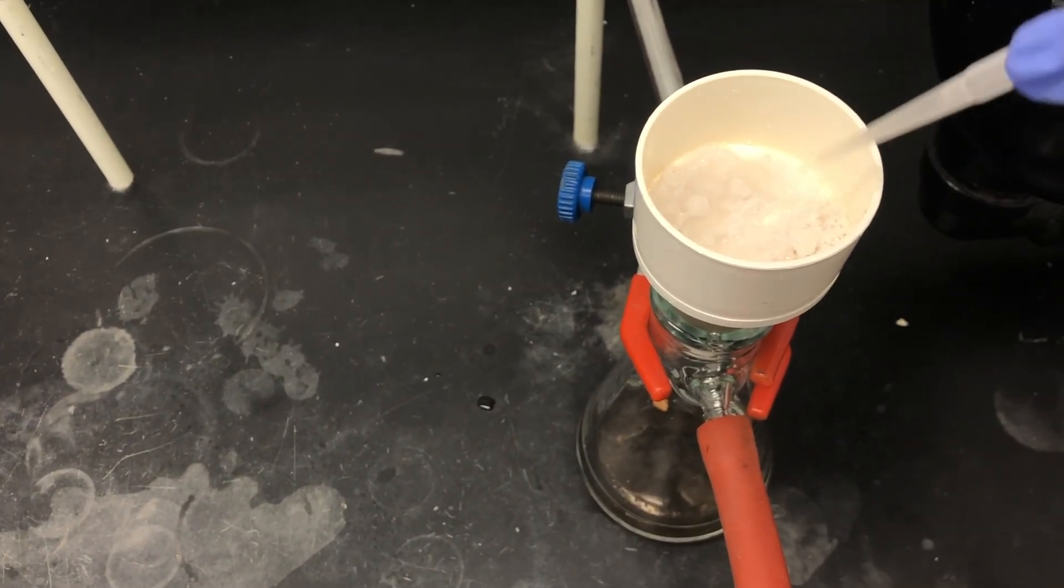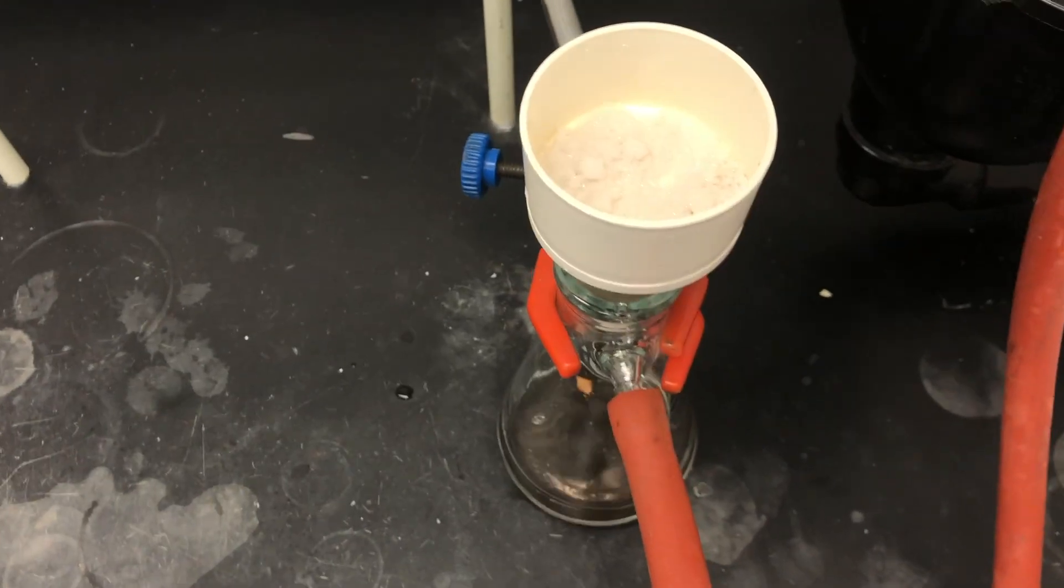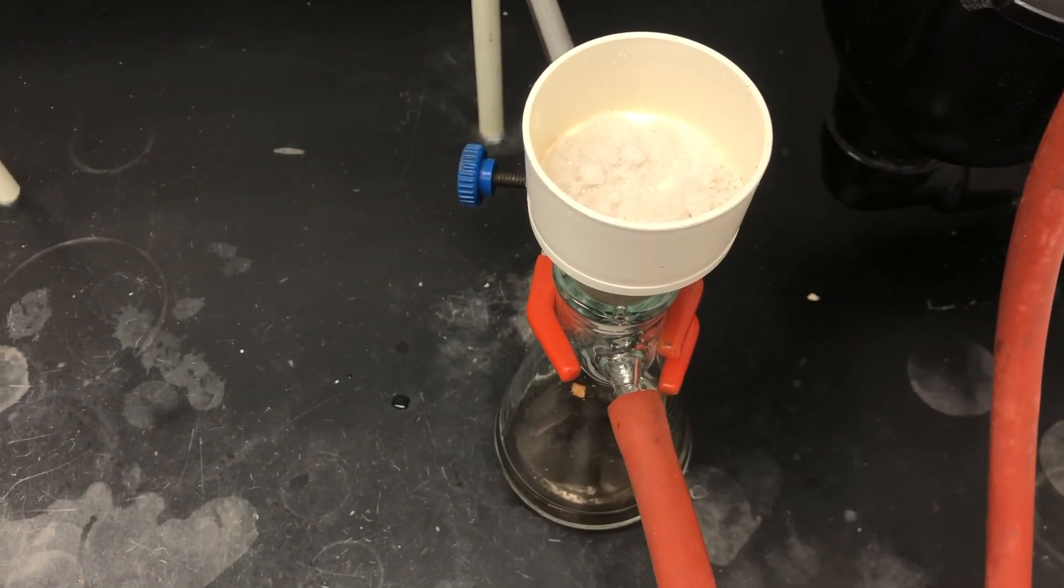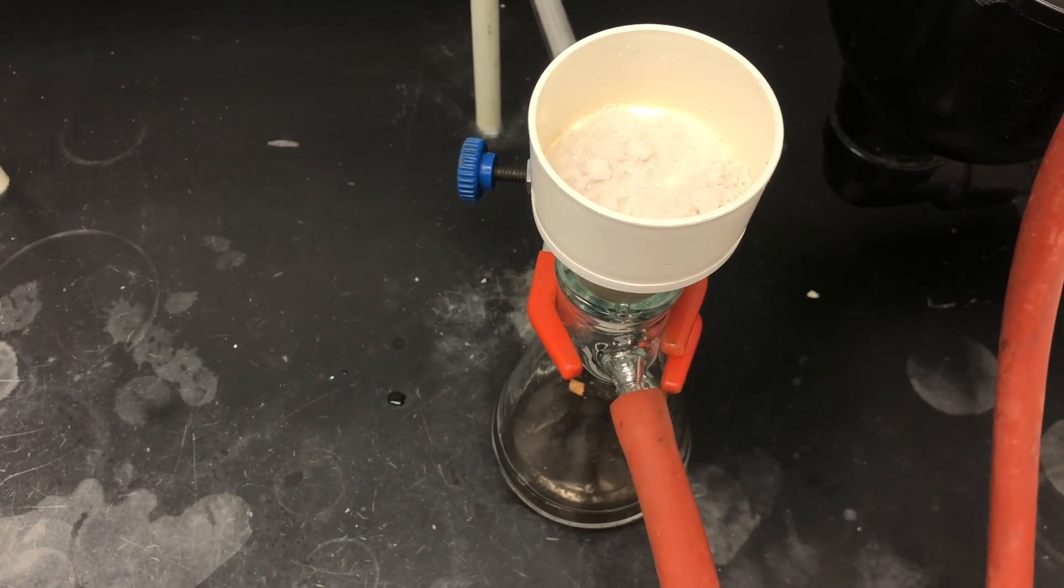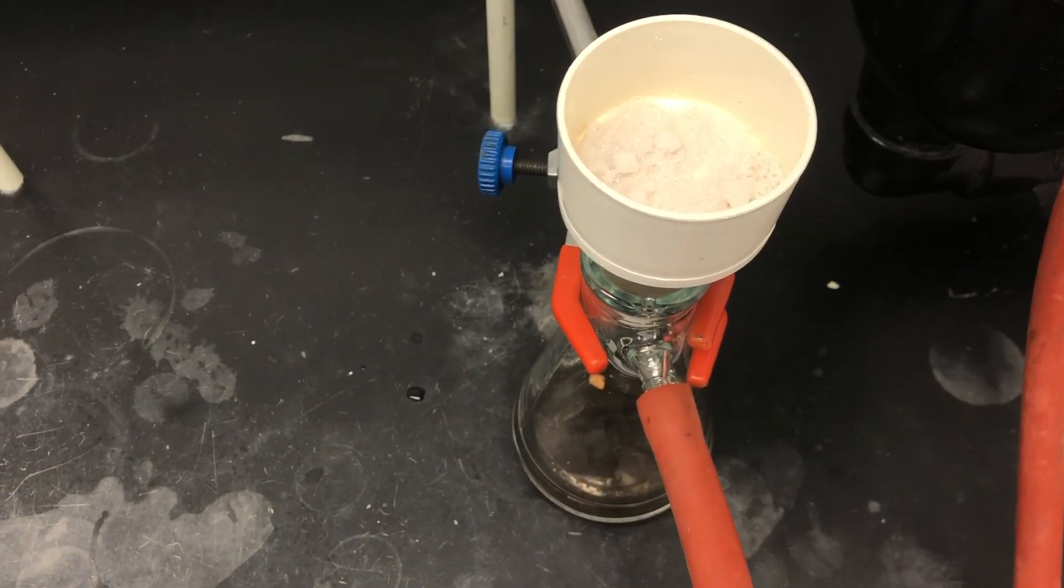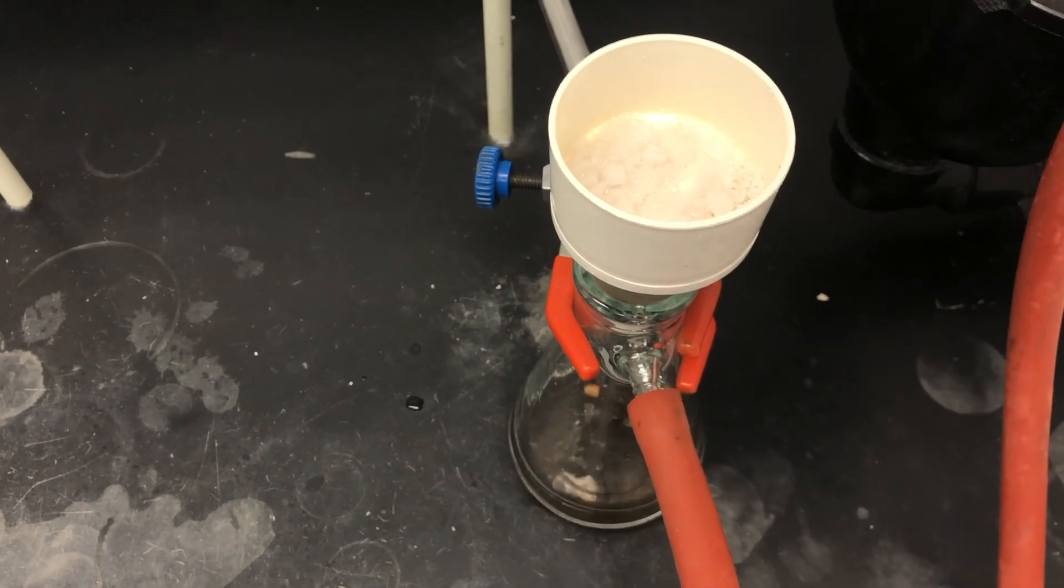By washing the product with two 3-milliliter portions of cold DI water, we ensure that any remaining acetic anhydride that hasn't reacted gets washed away as well.